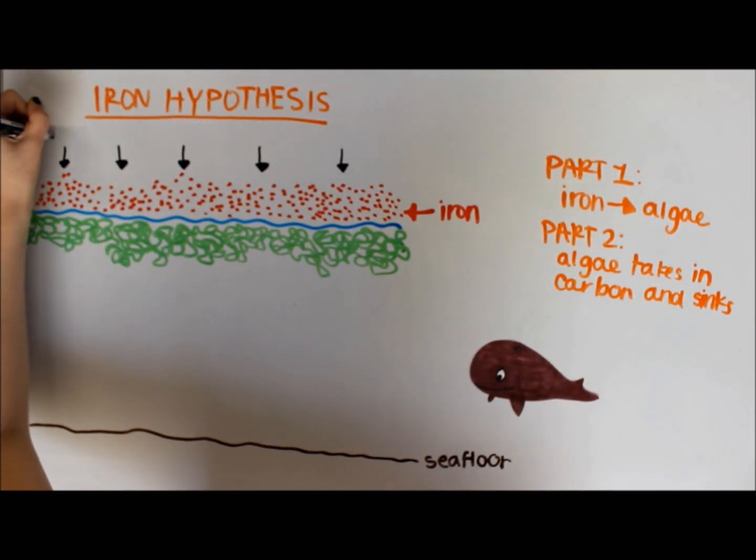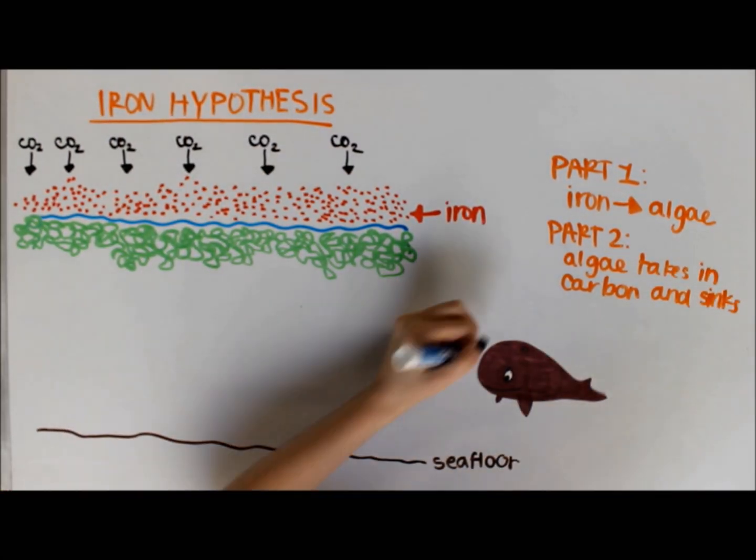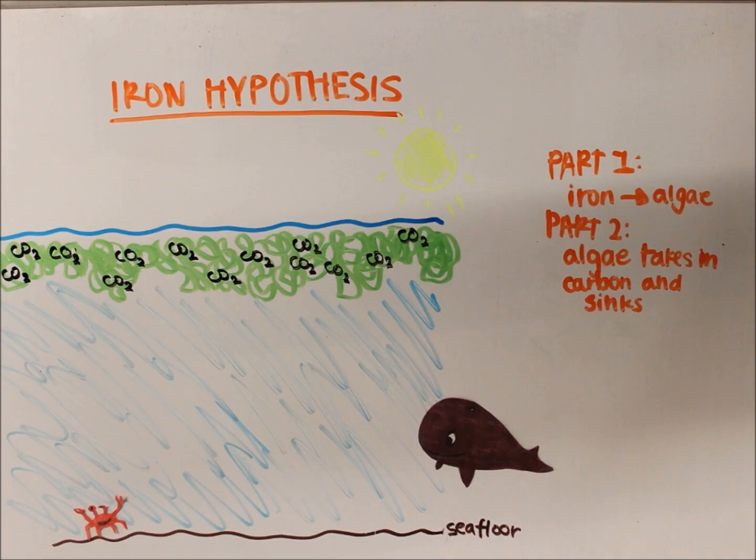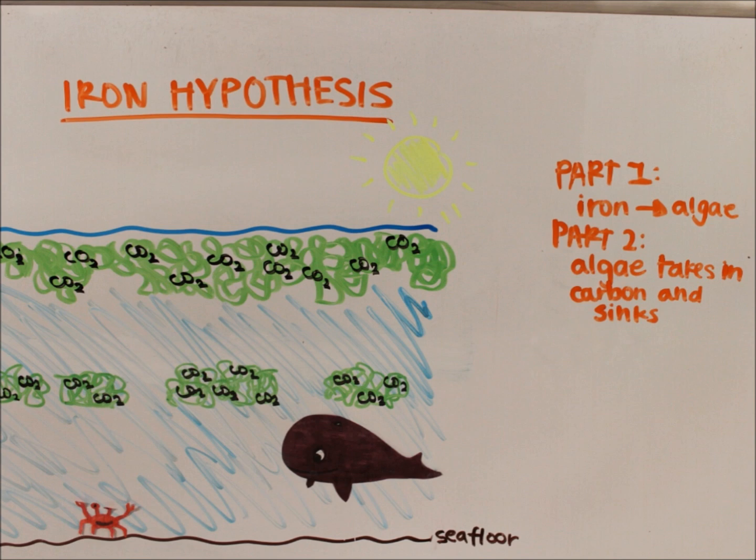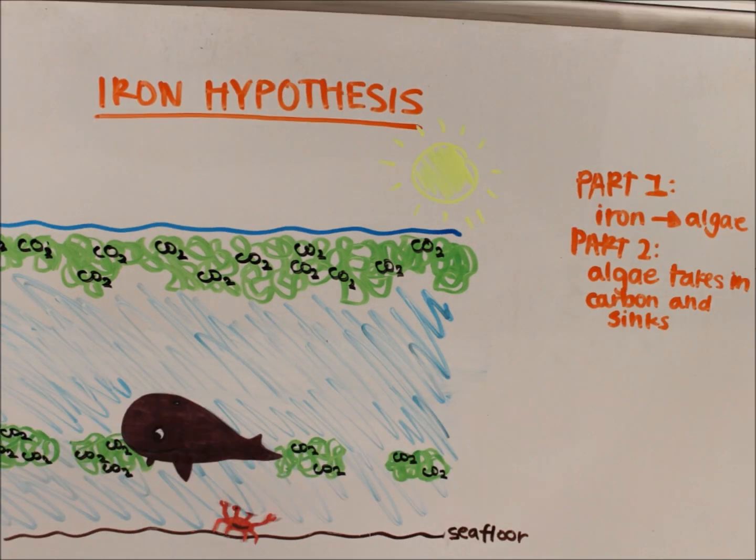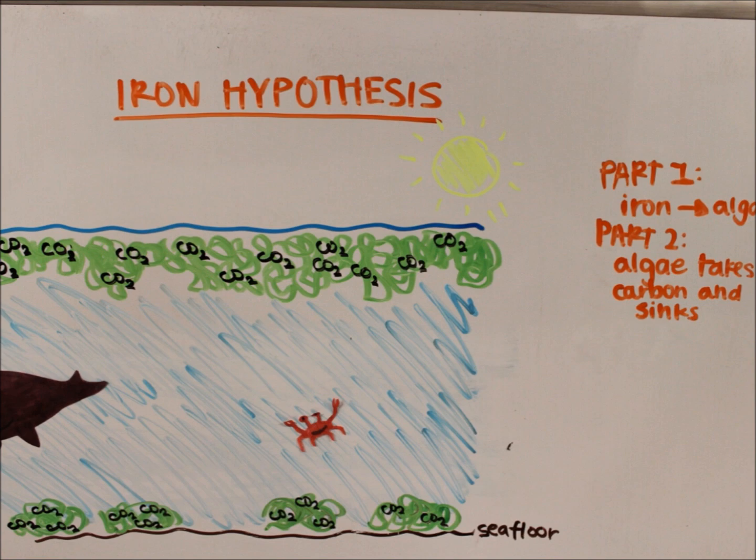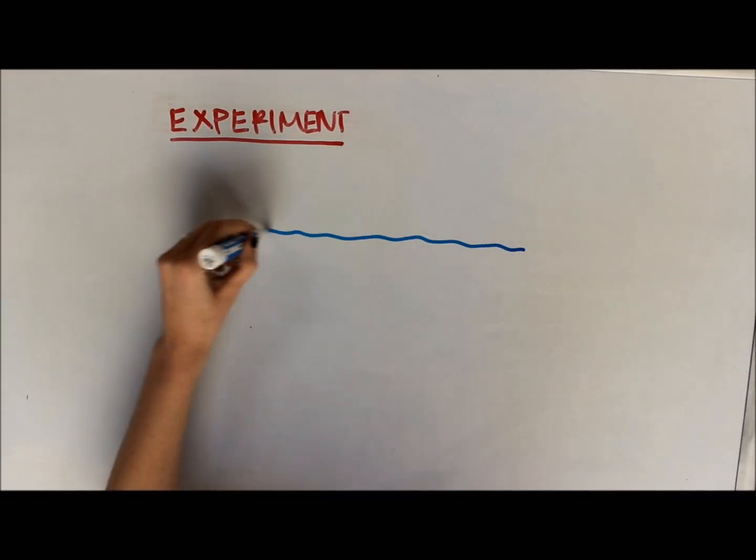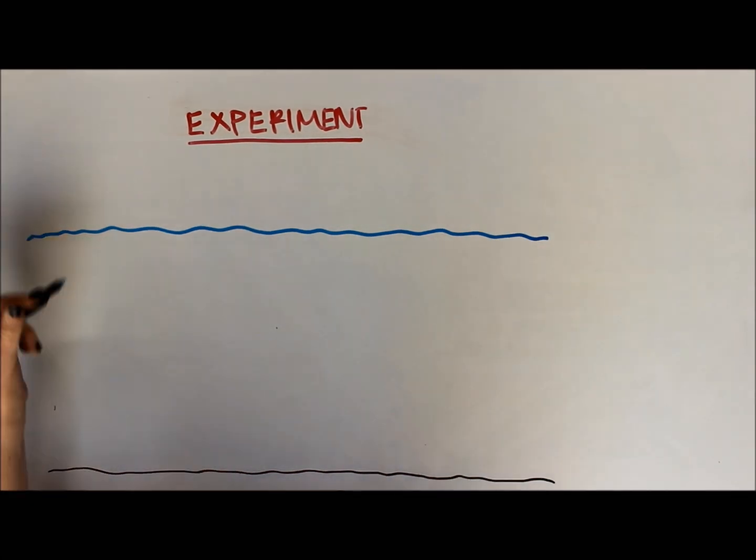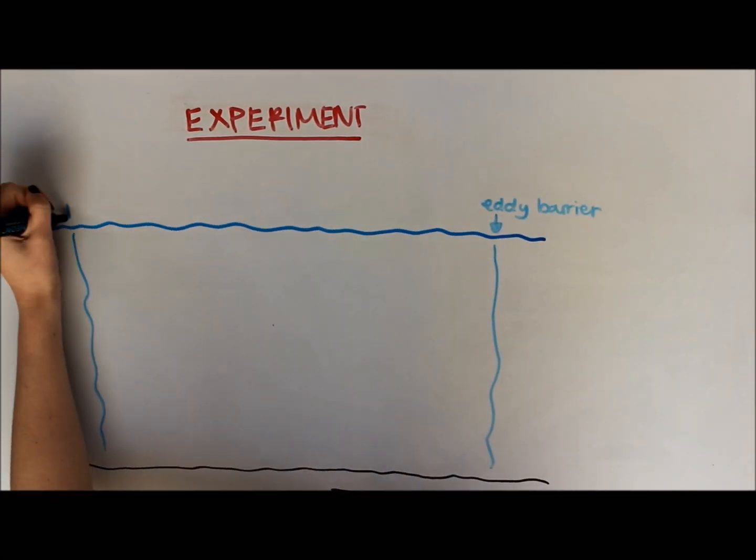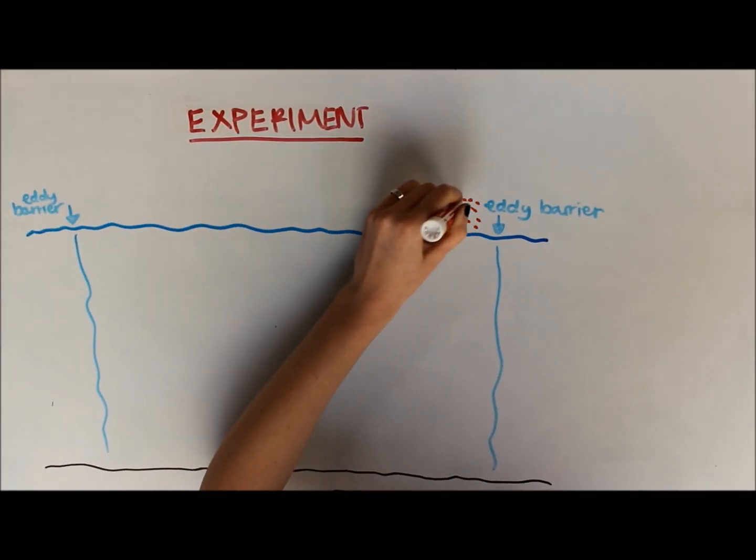During photosynthesis, the algae will get heavy with carbon dioxide, die, and sink from the surface to deep ocean and the ocean floor where it will sequester or hold significant amounts of carbon from the atmosphere. The European iron fertilization experiment team used an eddy 60 kilometers in diameter to test the hypothesis.